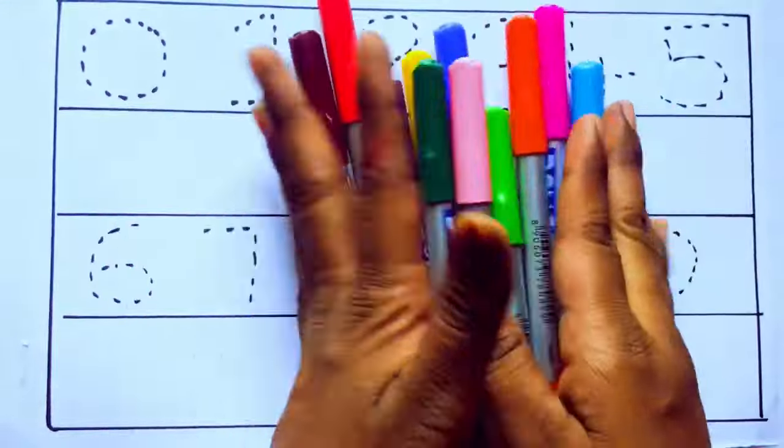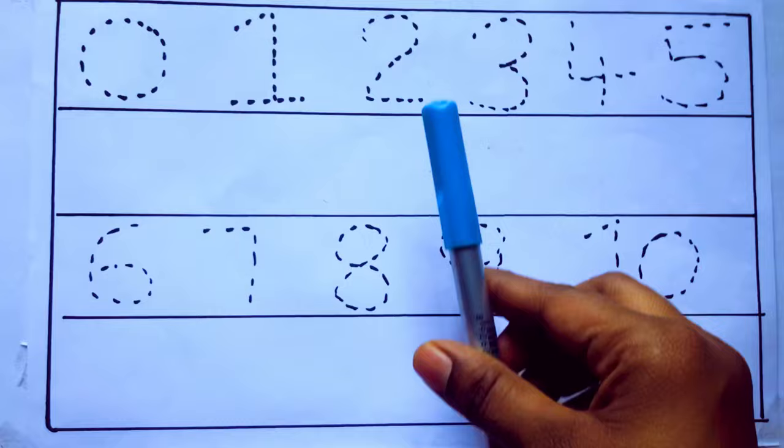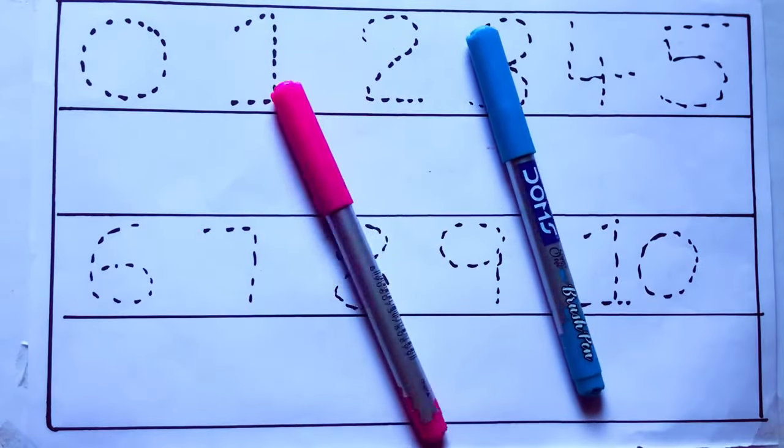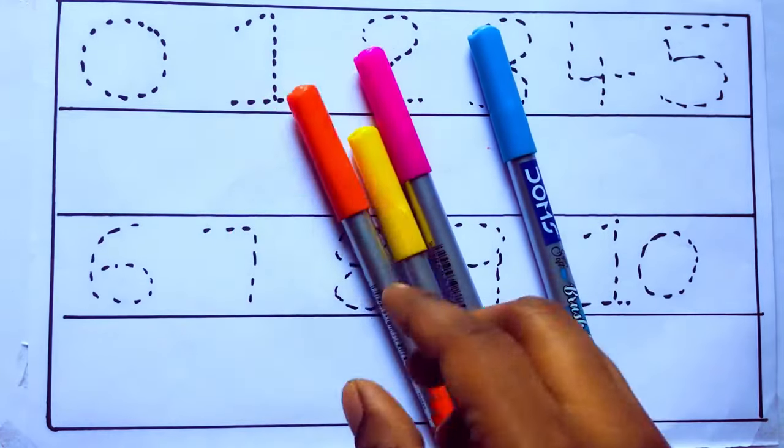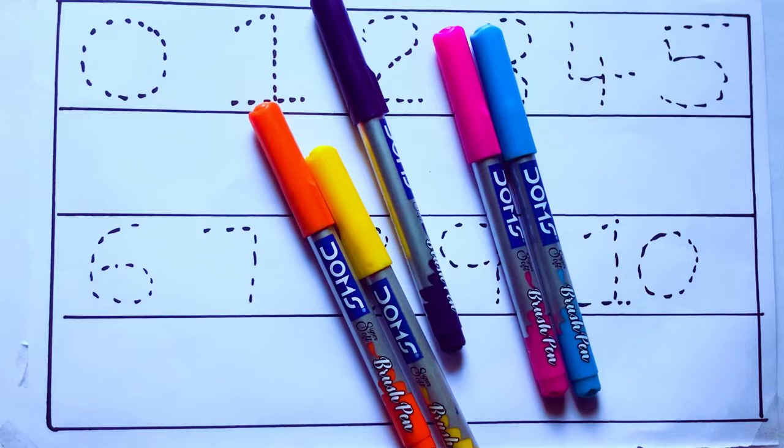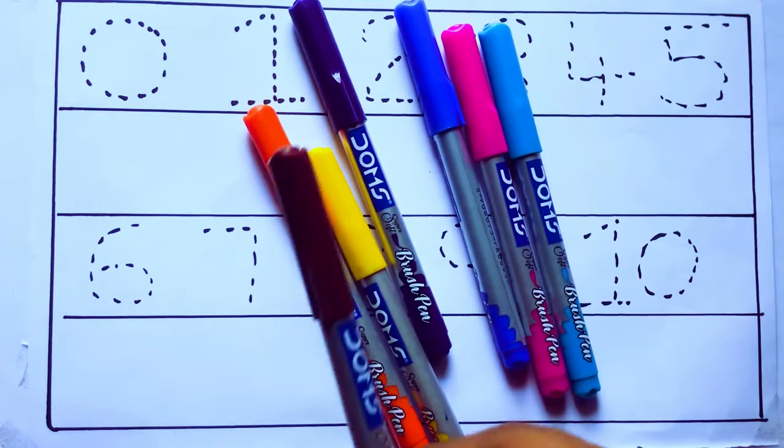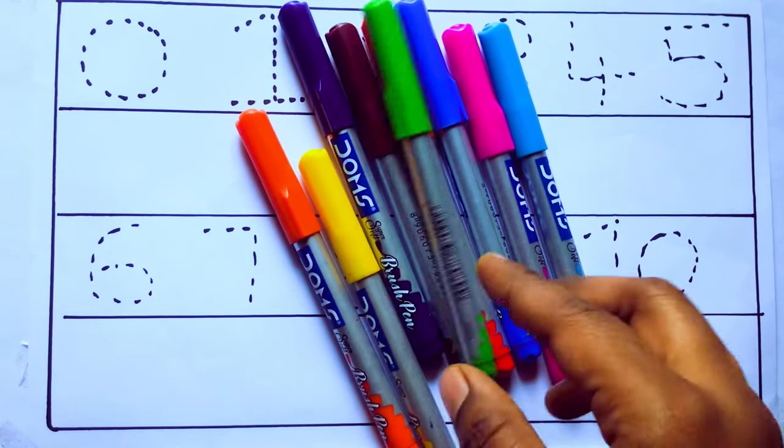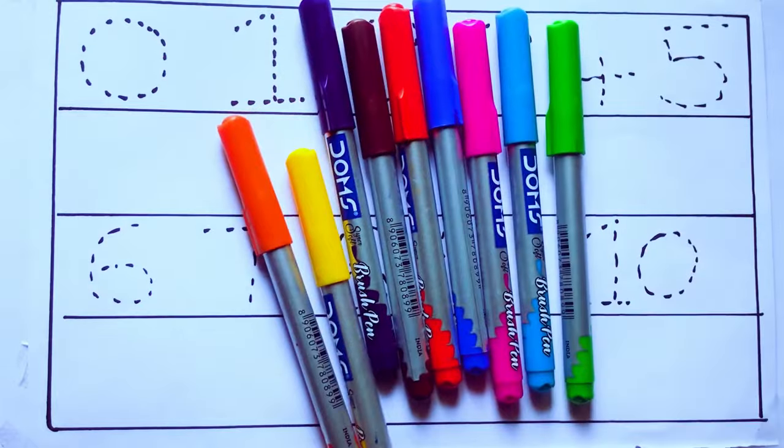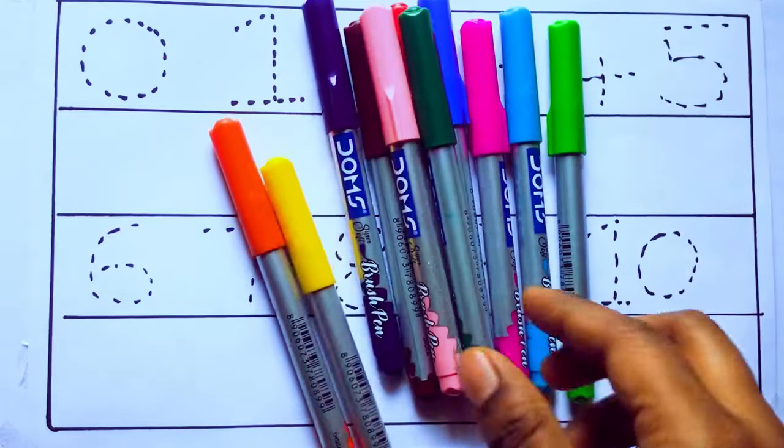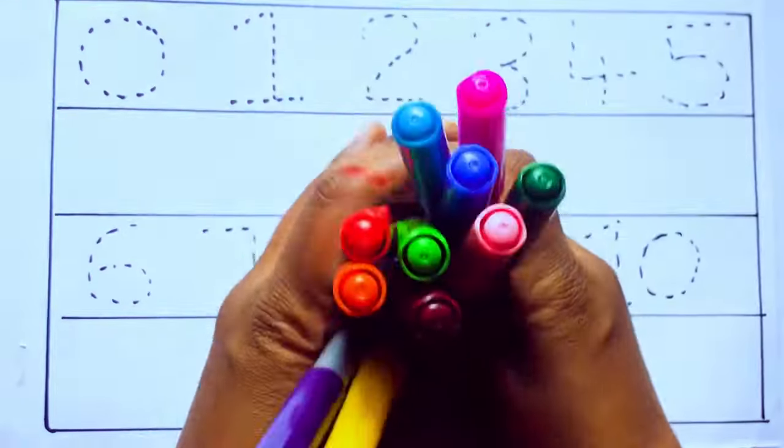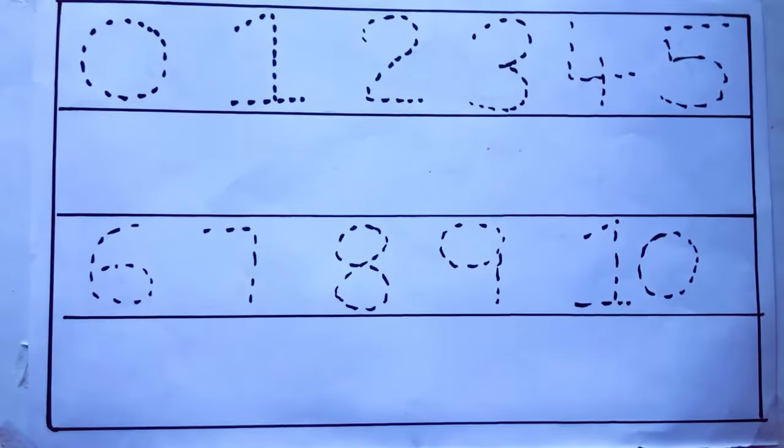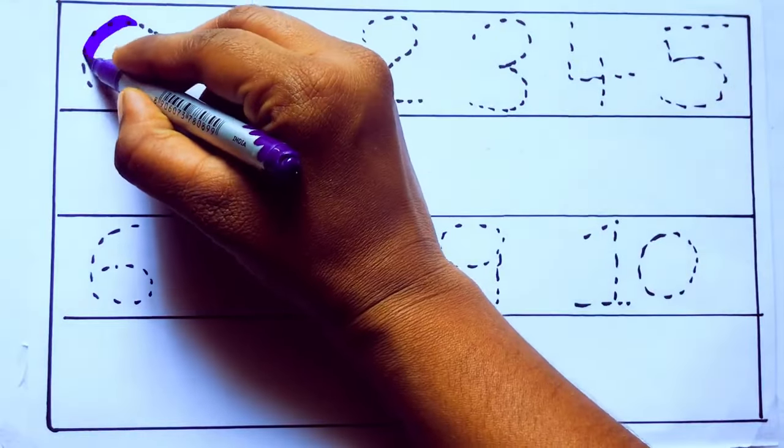Let's learn some colors. These are all the color pencils. Let's learn the names: sky blue color, pink color, yellow color, orange color, violet color, blue color, brown color, red color, green color, blue green color, and pink color. Let's draw numbers.